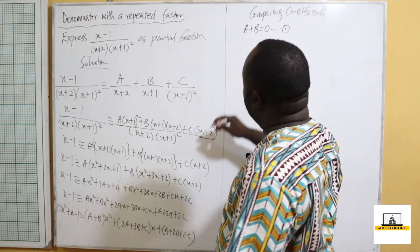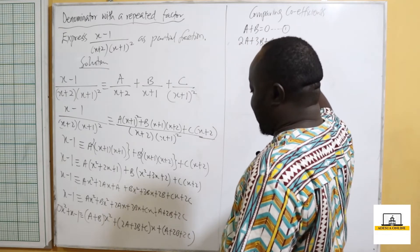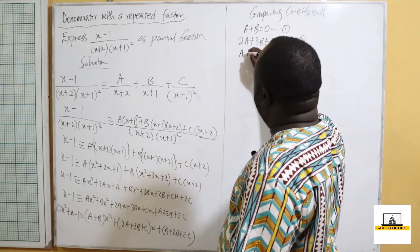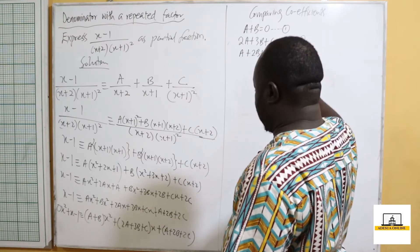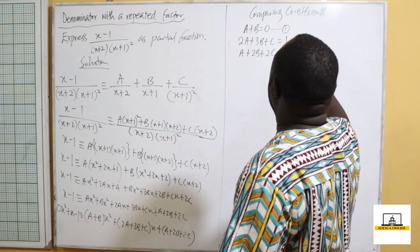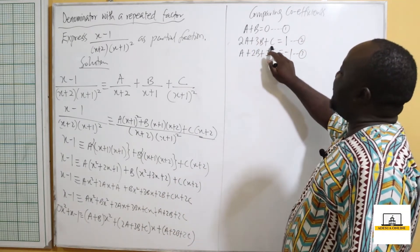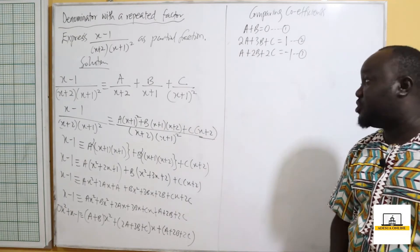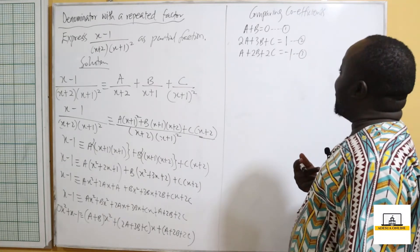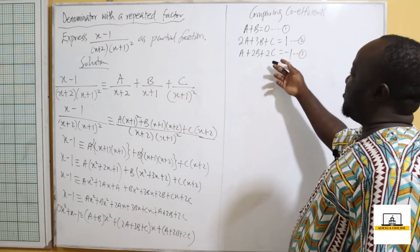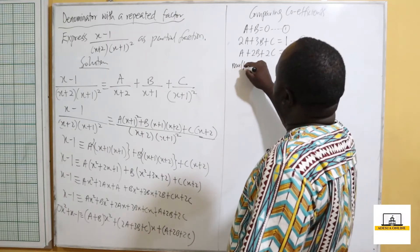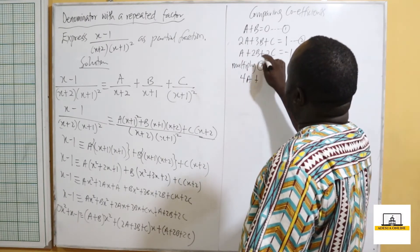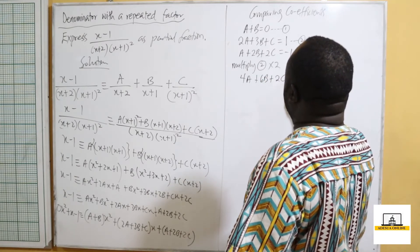To eliminate C, multiply equation 2 by 2: 4A + 6B + 2C = 2, call this equation 4. Equation 3 is A + 2B + 2C = −1. Subtracting equation 3 from equation 4: 3A + 4B = 3, call this equation 5.